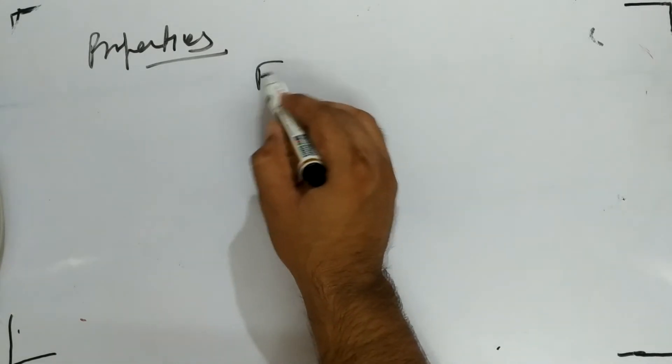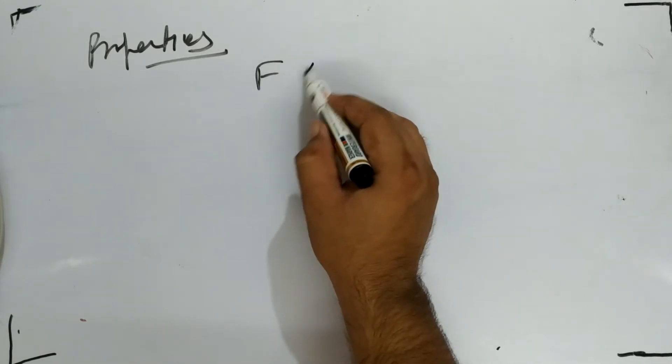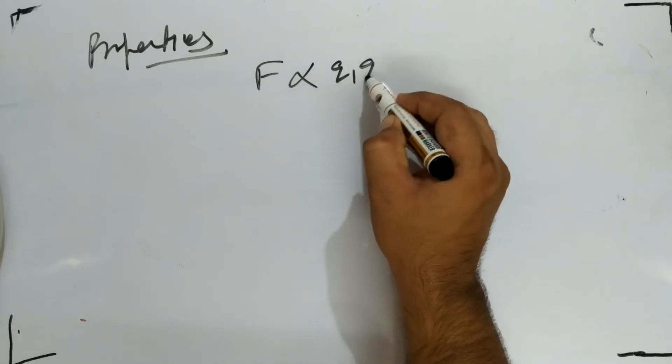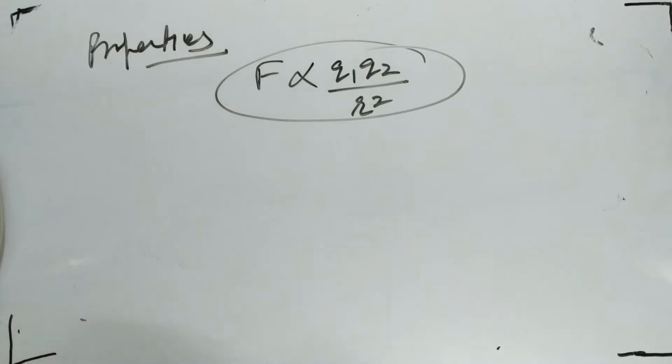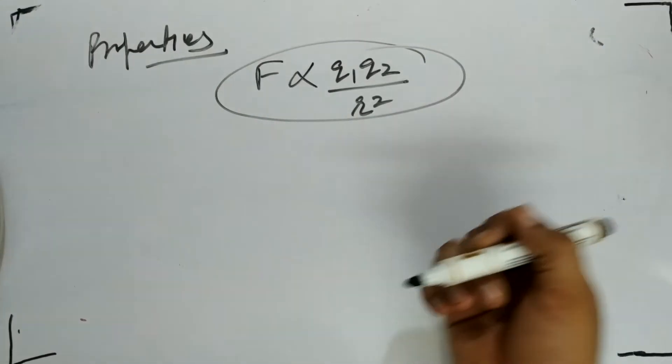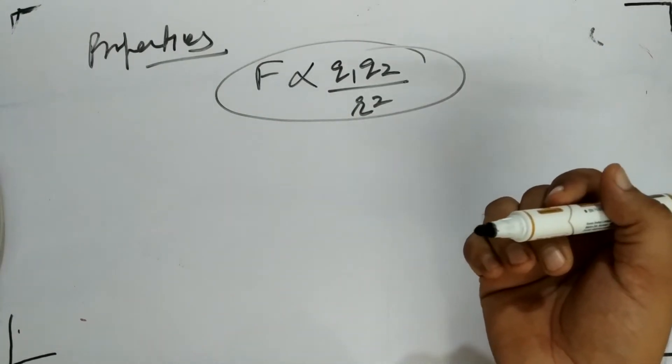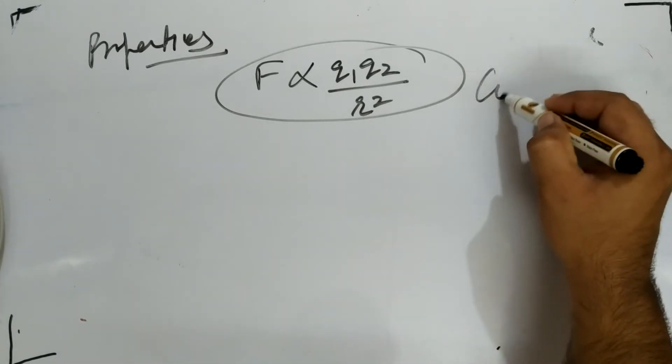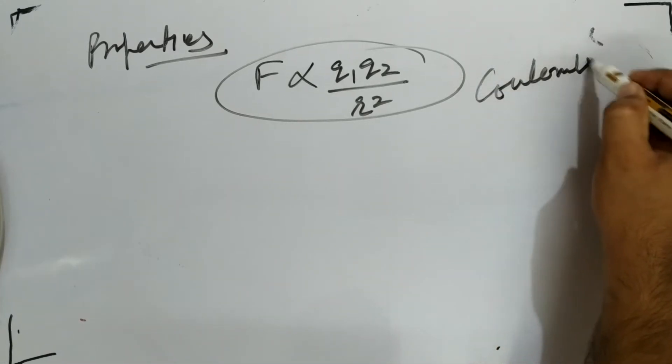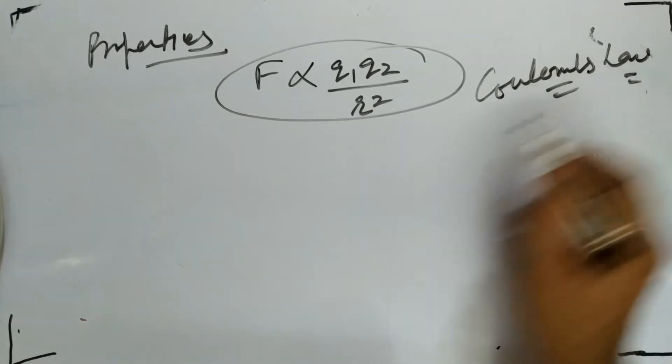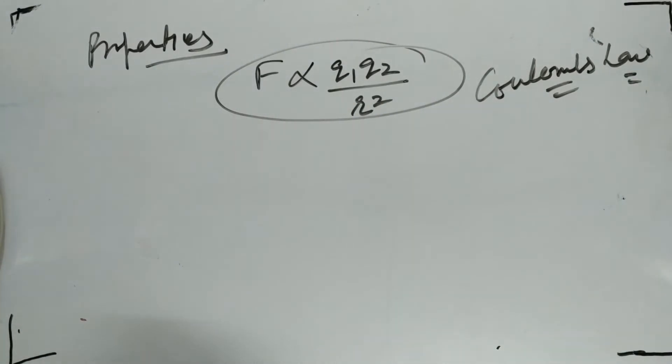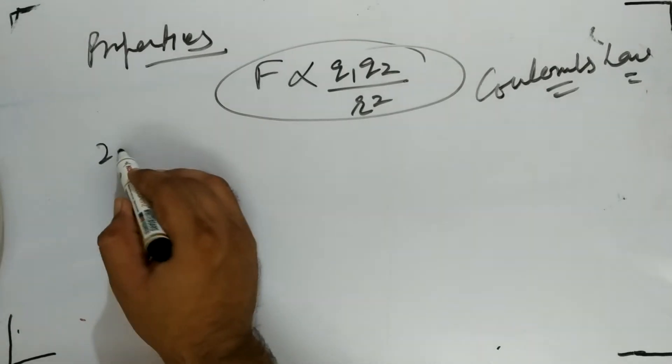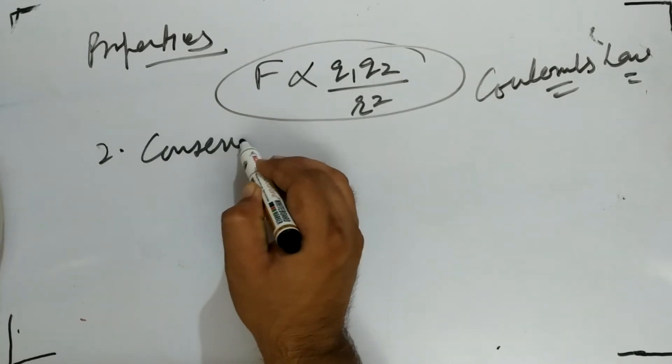Next we have force between two charges, directly proportional to the product of charges and inversely proportional to square of distance between them. This is called Coulomb's law. Force between charges you can find out. Next property: charges are conserved.